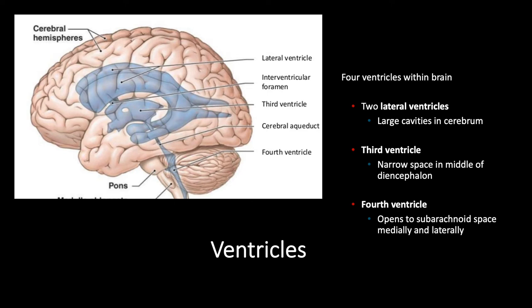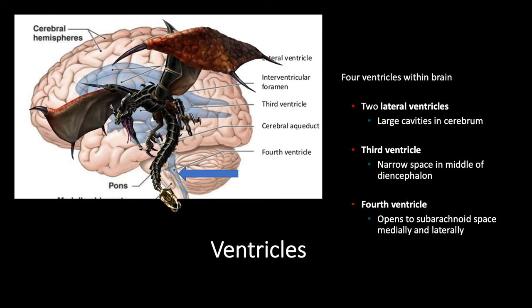A good way to remember this — Jen actually taught me this one — is that this kind of looks like a dragon. The lateral ventricles look like wings, the third ventricle makes the body of that dragon, while the fourth ventricle makes the tail. You can superimpose this dragon-like figure on top of the ventricle diagram, and that's where the CSF enters into the subarachnoid space.